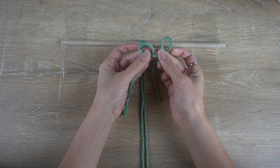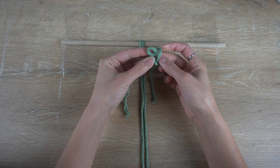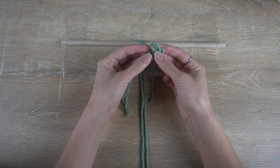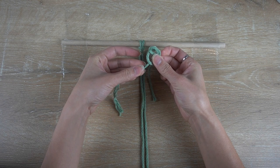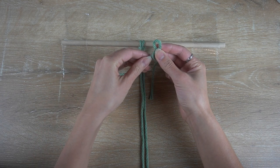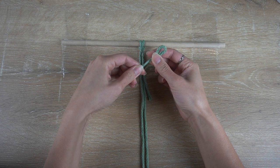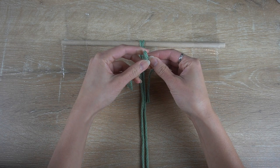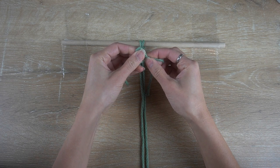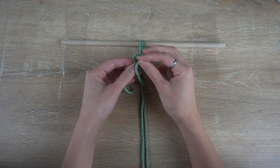Then on the right side next to it, scrunch up a part of the string together to form a loop and then take that loop and place it within the left loop. Then pull on the left cord to tighten. This is a slipknot.